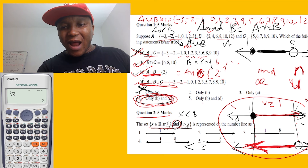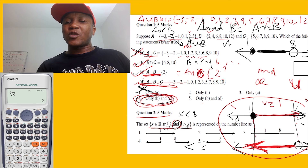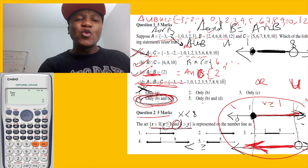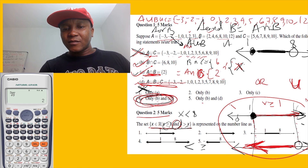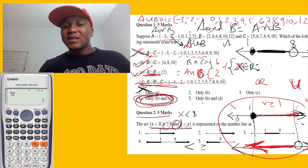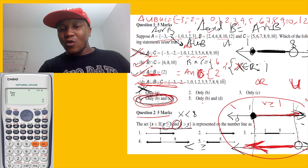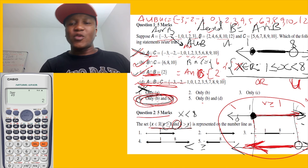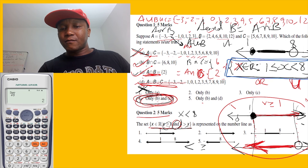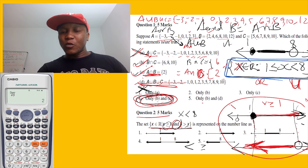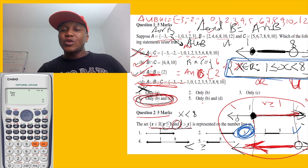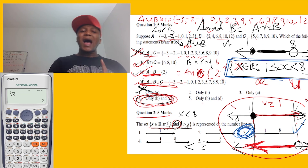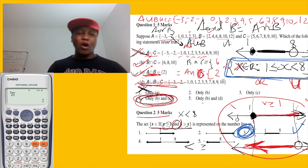So the number line runs from one to eight. In set-builder notation we write: x is an element of real numbers such that one is less than or equal to x and x is less than eight. That's the answer.